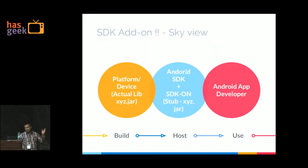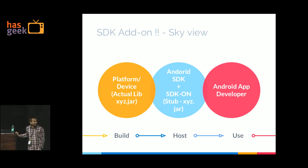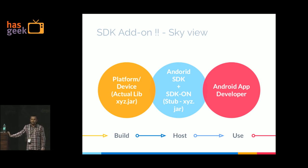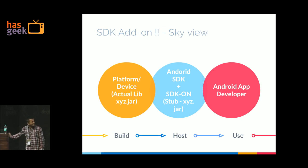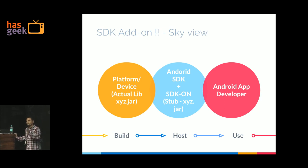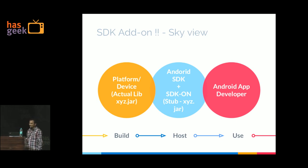The OEM or platform developer writes the code and produces a library exposing specific features to application developers. Then there is a distribution cycle where we generate the distribution package, host it on an HTTP server, and give the link to application developers. My slides go right to left — starting with the application developer — since there are many app developers in the audience.